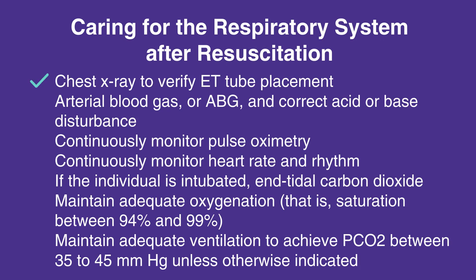Chest X-ray to verify ET tube placement. Arterial blood gas, or ABG, and correct acid or base disturbance. Continuously monitor pulse oximetry. Continuously monitor heart rate and rhythm. If the individual is intubated, end tidal carbon dioxide. Maintain adequate oxygenation — that is, saturation between 94 and 99%. Maintain adequate ventilation to achieve PCO2 between 35 to 45 millimeters of mercury, unless otherwise indicated.